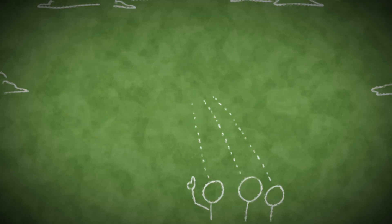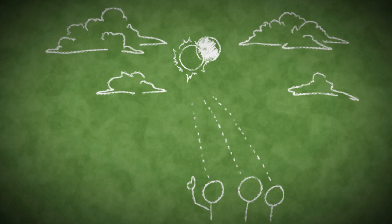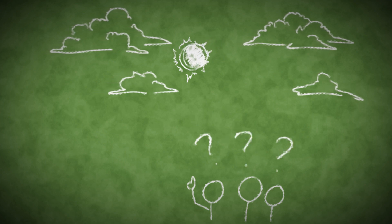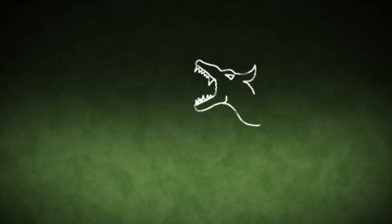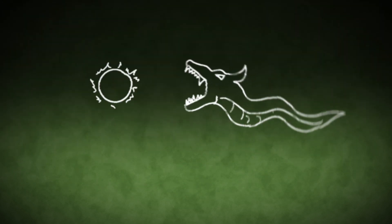As long as we have gazed at the sky, people have regarded eclipses of the sun as mysterious and even terrifying events. When the sky went dark in the daytime, many ancient cultures feared that a monster might be devouring the sun.